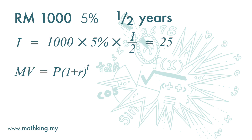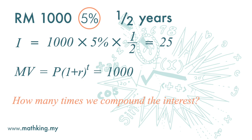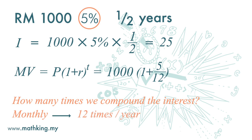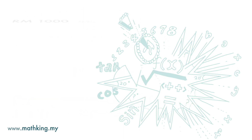For compounding, the matured value is principal times one plus interest rate to the power of time period. The principal is one thousand. We cannot just use five percent because five percent is for one year. There is a question of how many times we do the compounding. If we compound the interest monthly, the monthly interest is five percent divided by twelve. Since we compound it monthly, we compound it twelve times a year, and half a year is six months, so the time period t is six. We get 1025 ringgit 26 cents.